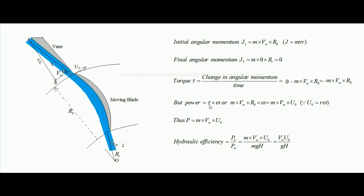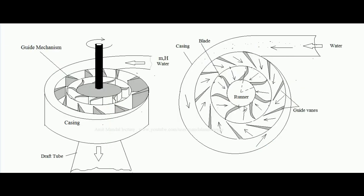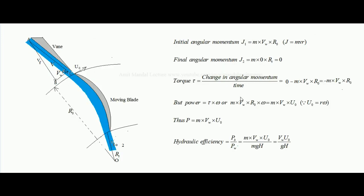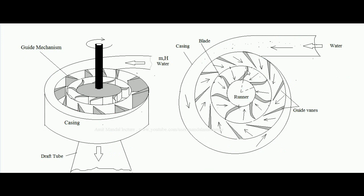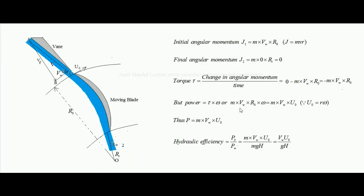In rotational motion, power is given by torque multiplied by angular velocity omega. So power = m·v_w·r_o·omega. Since tangential velocity v = r·omega, we have r_o·omega = u_o, the tangential velocity of the blade tip at inlet. Therefore, the total power developed over the blade is P = m·v_w·u_o, where v_w is the tangential component of water velocity at inlet and u_o is the blade tip tangential velocity at inlet.